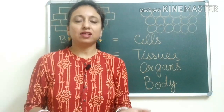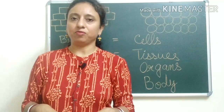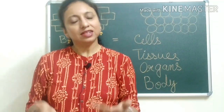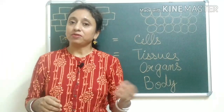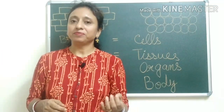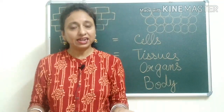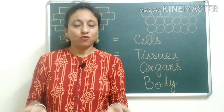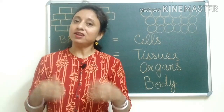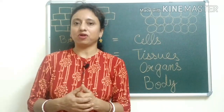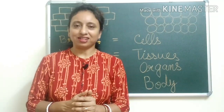Some organs are located inside our body. Those are known as internal organs. For example, the liver, the heart, and the kidneys — we can't see them because they are located inside our body. So they are known as the internal organs.